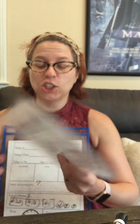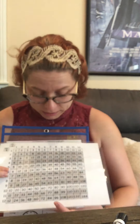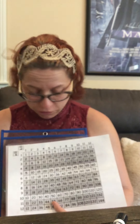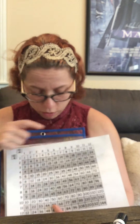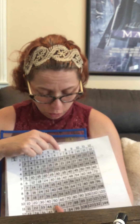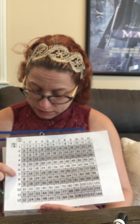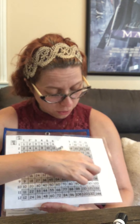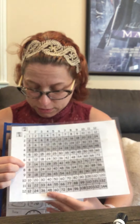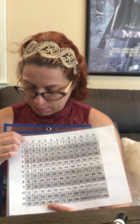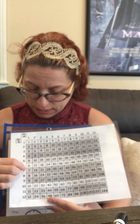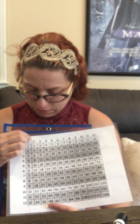We're going to practice counting with seven. Now remember, on the multiplication chart you find the seven, and you can go at the top and go down, or on the side and go across. I'm going to do it from the side so you can see it with me.